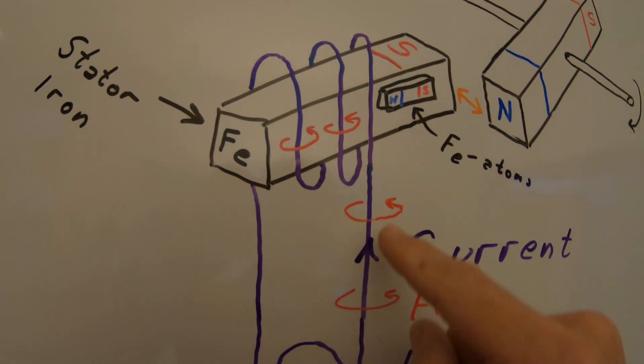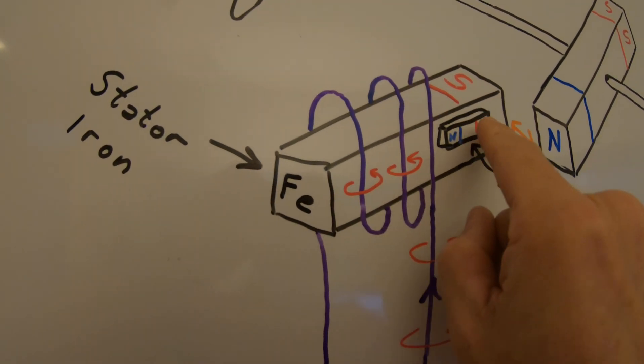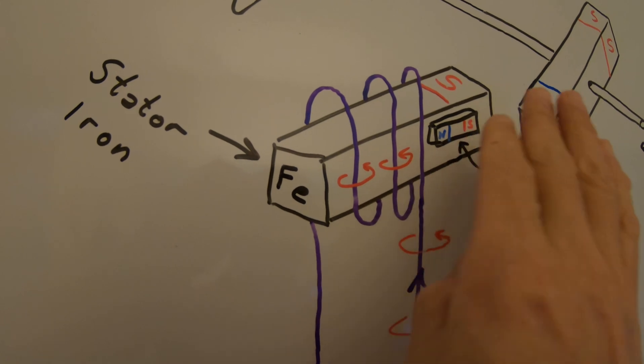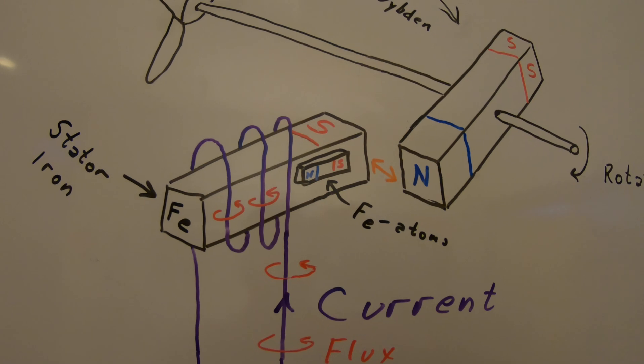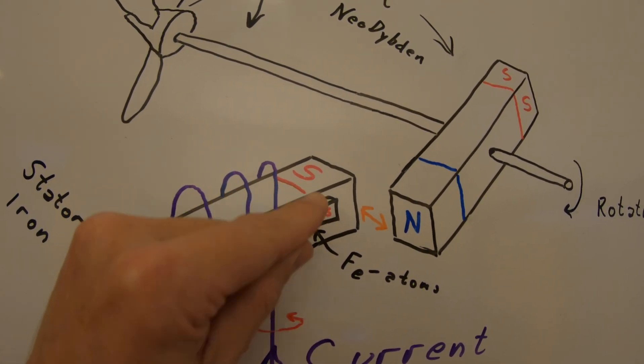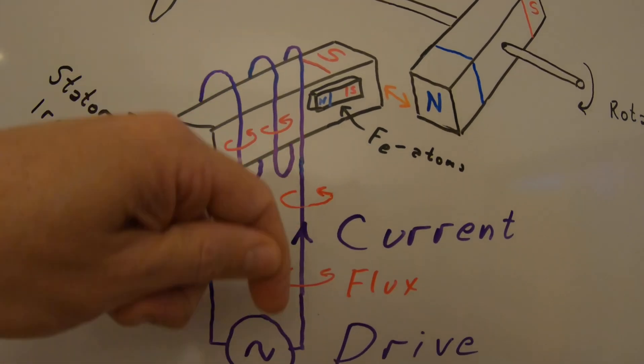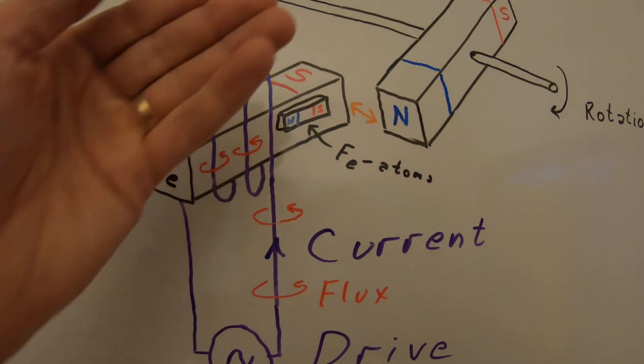So here we can with the electrical current force all the south poles to point in one direction. So this piece of iron becomes like a magnet where we can control the south pole in this case. And we can also then by turning the direction of the current then we can turn this pole into becoming a north pole.